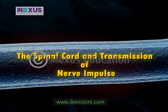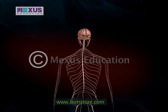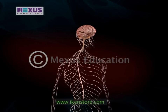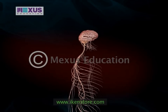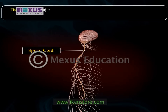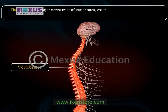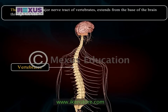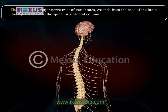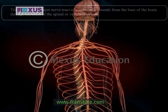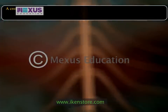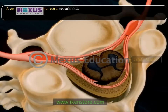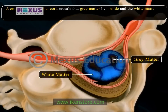The Spinal Cord and Transmission of Nerve Impulse. The second and most important part of the central nervous system is the spinal cord. The spinal cord, a major nerve tract of vertebrates, extends from the base of the brain through the canal of the spinal or vertebral column. A cross-section of the spinal cord reveals that grey matter lies inside and white matter on the outer side of the spinal cord.